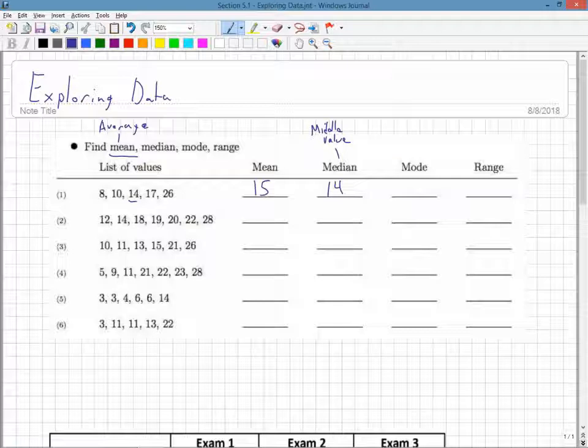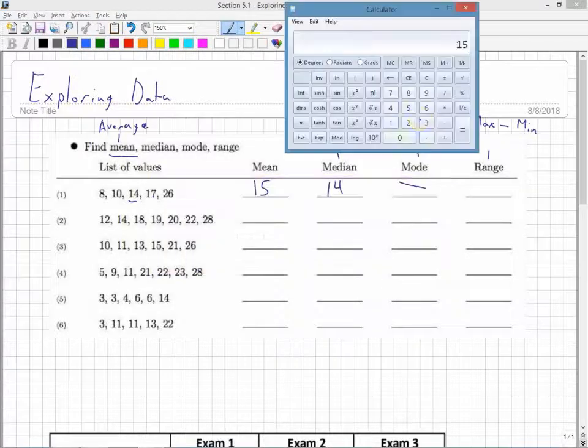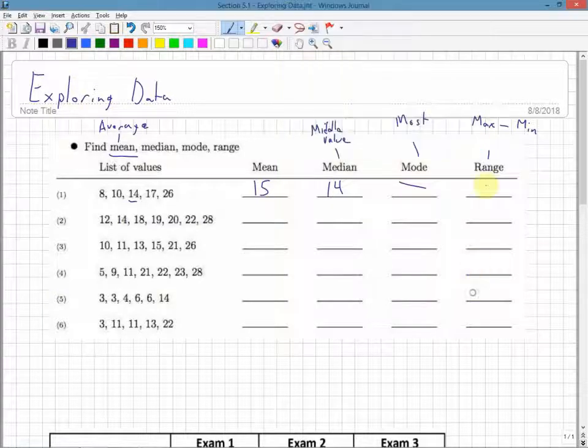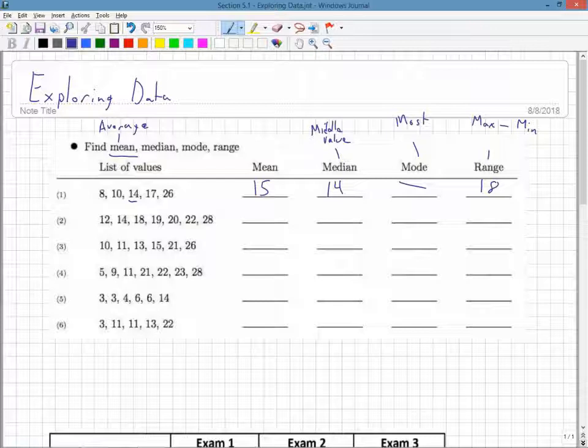The median value here is 14 because there's an odd number of data. The mode is the one that appears the most. Here I have 8, 10, no repeating values, so there is no mode. The range is the max minus the min - the maximum value minus the minimum value. I take 26 and subtract 8, getting 18, so the range is 18.